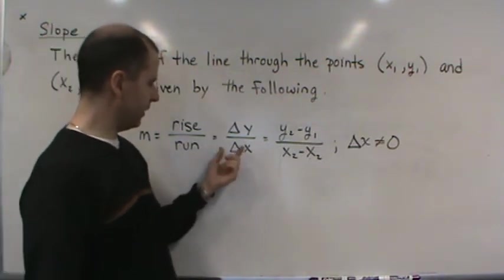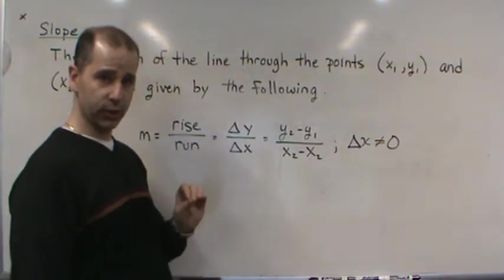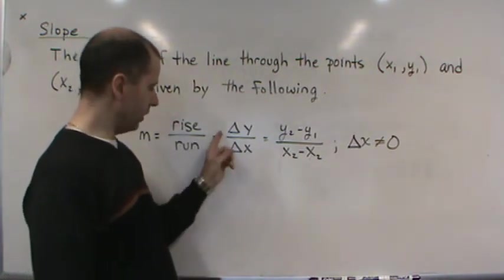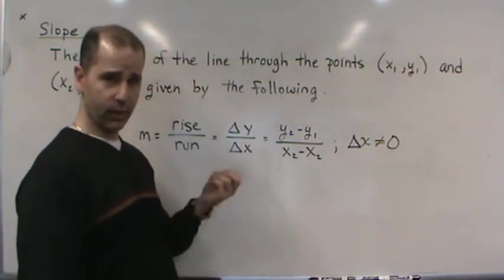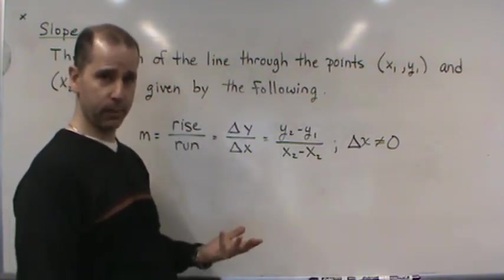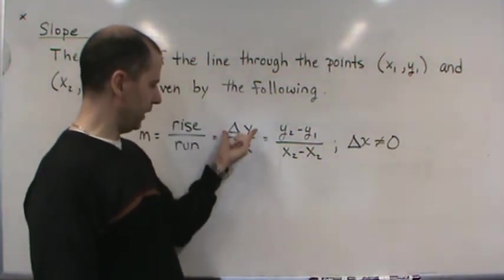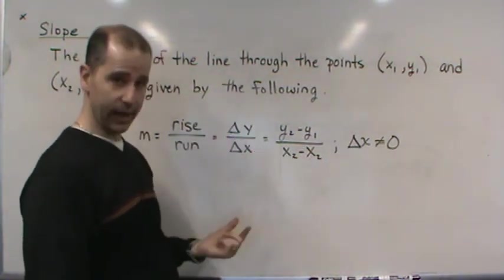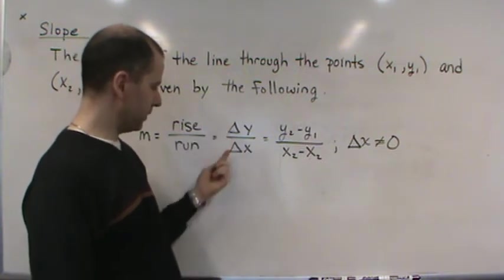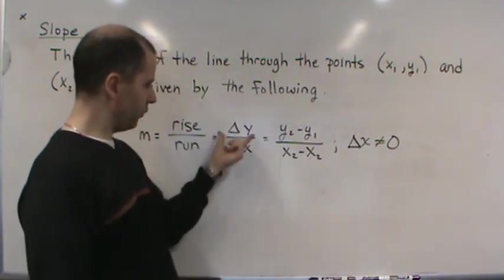This is delta y over delta x. Delta is the symbol for change. If you're taking chemistry or physics, delta comes up all the time in science and mathematics. So change in y - this means the change in y divided by the change in x. That's what this means: Δy over Δx, delta y divided by delta x.